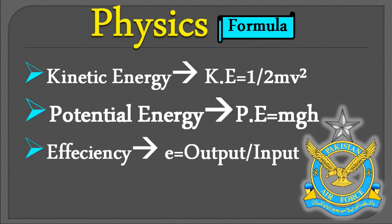جب کوئی تھوڑا کسی لوہے یا چیز پہ مارتا ہے تو اس میں elastic potential energy ہوتی ہے — یہ MCQ آپ کے paper میں آتا ہے۔ Efficiency کا formula ہے e = output/input۔ Percentage efficiency = (output/input) × 100۔ Output اور input دی ہوتی ہیں اور percentage efficiency نکالنی ہوتی ہے۔ Efficiency کا کوئی unit نہیں ہوتا — یہ یاد رکھیں۔